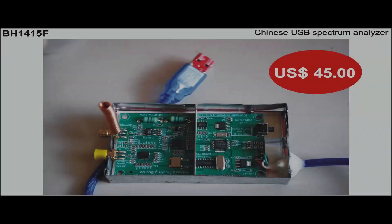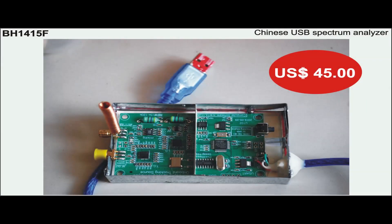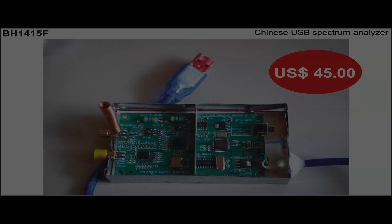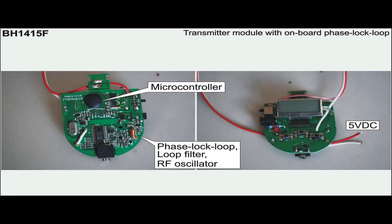So I will try to modify this module by adding an RF amplifier, such that every step of the modification can be observed on the USB spectrum analyzer. The module has its own MCU phase lock loop and a little LCD frequency display.